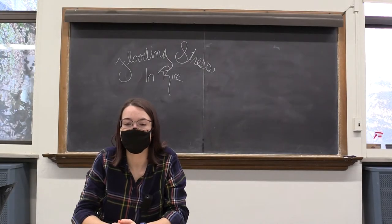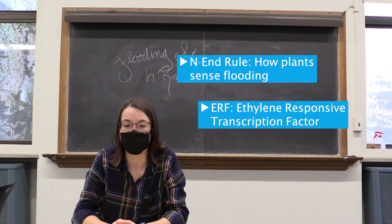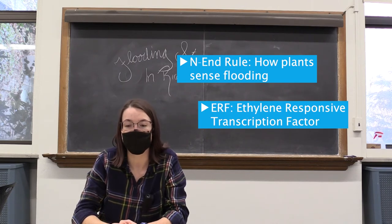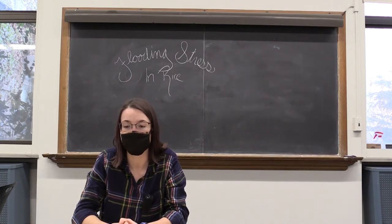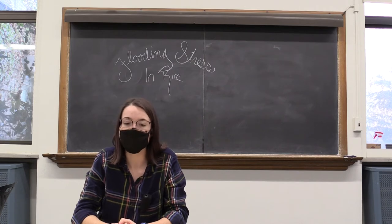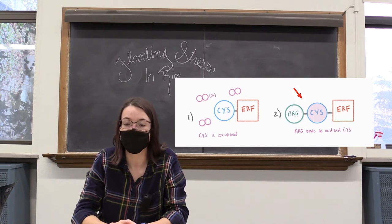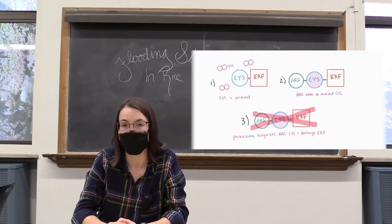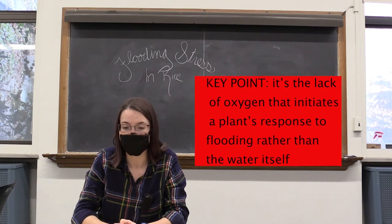How can plants tell when their soil is flooded? The answer follows a pathway called the N-END rule, because it takes place at the N-END of an ERF, or ethylene-responsive transcription factor, which is a protein that's dependent on ethylene. In normal conditions, oxygen prevents proteins involved in flooding stress responses from being produced in the plant. This is because oxygen allows arginine to bind to the cysteine already on the protein, and the combination of arginine and cysteine marks the ERF for degradation by a proteasome. Without oxygen, the N-END remains unoxidized and is therefore not marked for degradation. This means that it's the lack of oxygen that initiates a plant's response to flooding rather than the water itself.